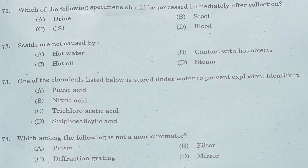Question 71: Which of the following body fluids is not typically used? Option A: urine. Option B: stool. Option C: CSF. Option D: blood. Answer is Option C, CSF.